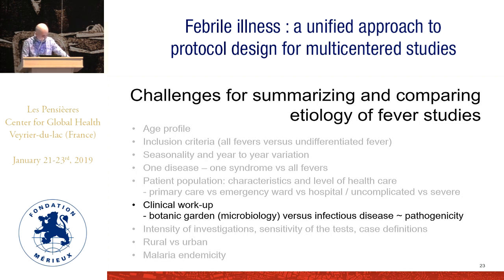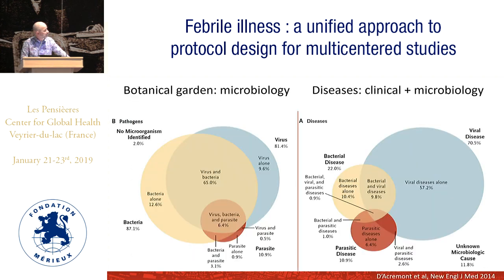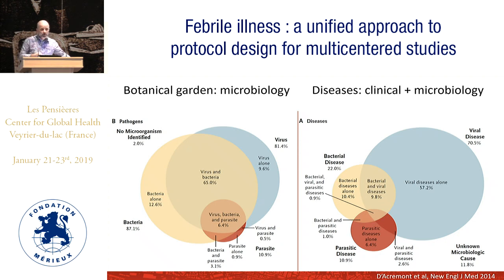When looking at clinical workup, we call it the 'botanic garden' if you do only microbiology. In our Tanzania example, we found viruses in nasopharyngeal swabs and blood, bacteria, and those who had both. If you look only at pathogens, the difficulty is then to infer the disease. You include clinical symptoms and signs and try to infer what is the cause of the fever — this is very difficult, and there are always arbitrary decisions when you do that. But it is important when you think about morbidity.